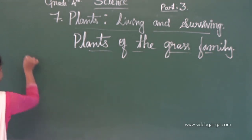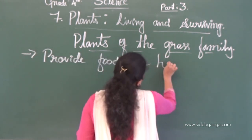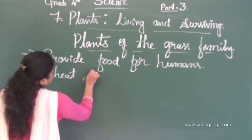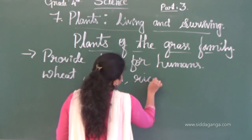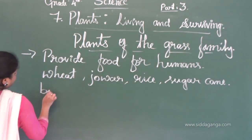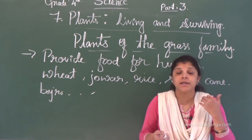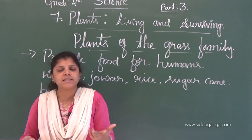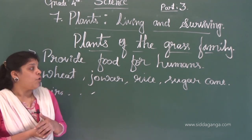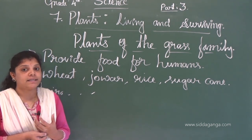Mainly, grass family plants provide food for humans. Many types of grass family plants provide food for us. Rice, wheat, bajra, and jowar all belong to the grass family. They provide food for us — for humans. It is very important.